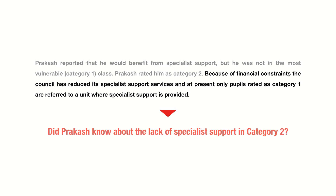Now, on the one hand, had Prakash known this and still gone ahead and categorized Ricky in category two, this would amount to a breach — he has acted below the reasonable standard expected because of prior knowledge, and this constitutes negligence. However, had he not known this — in other words, had Prakash presumed, correctly or incorrectly, that specialist support is available for both category one and category two — his actions may not be elevated to the level of breach.